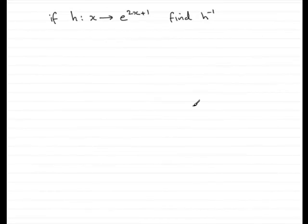In this example, we're given that h is a function such that x maps onto e to the 2x plus 1, and we've got to find the inverse function of h.